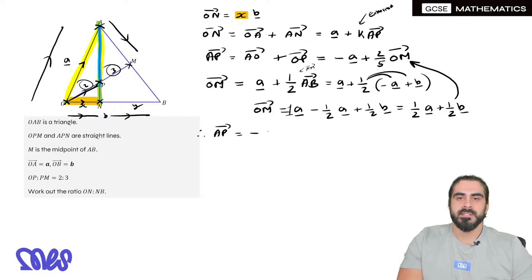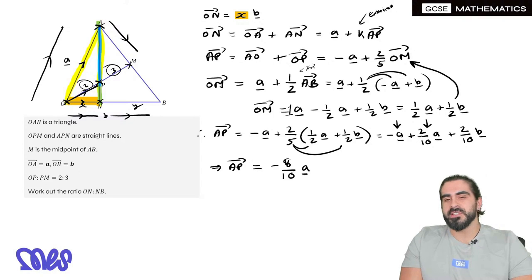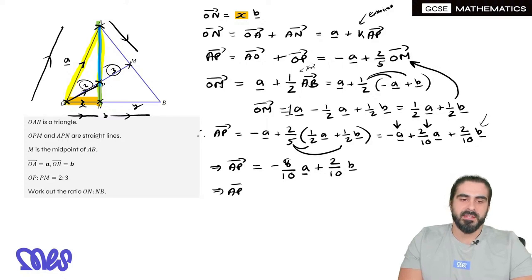Therefore, A to P is minus A plus two fifths of O to M, which is half A plus half B, which then simplifies if we expand. Let's simplify it. So A to P then is minus A plus two tenths A. You can even say that two tenths is one fifth. Let's simplify it. So A to P then is minus, divide top and bottom by two, four fifths A plus one fifth B.